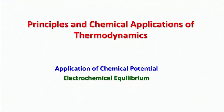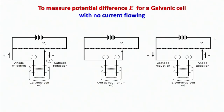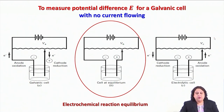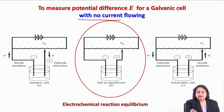Hello, students. Welcome back to the discussion of electrochemical equilibrium as part of our course Principles and Chemical Applications of Thermodynamics. What we have seen in this lecture so far is that when describing electrochemical reaction equilibrium, what we need to measure is the potential difference E between the two electrodes in a galvanic cell with no current flowing.